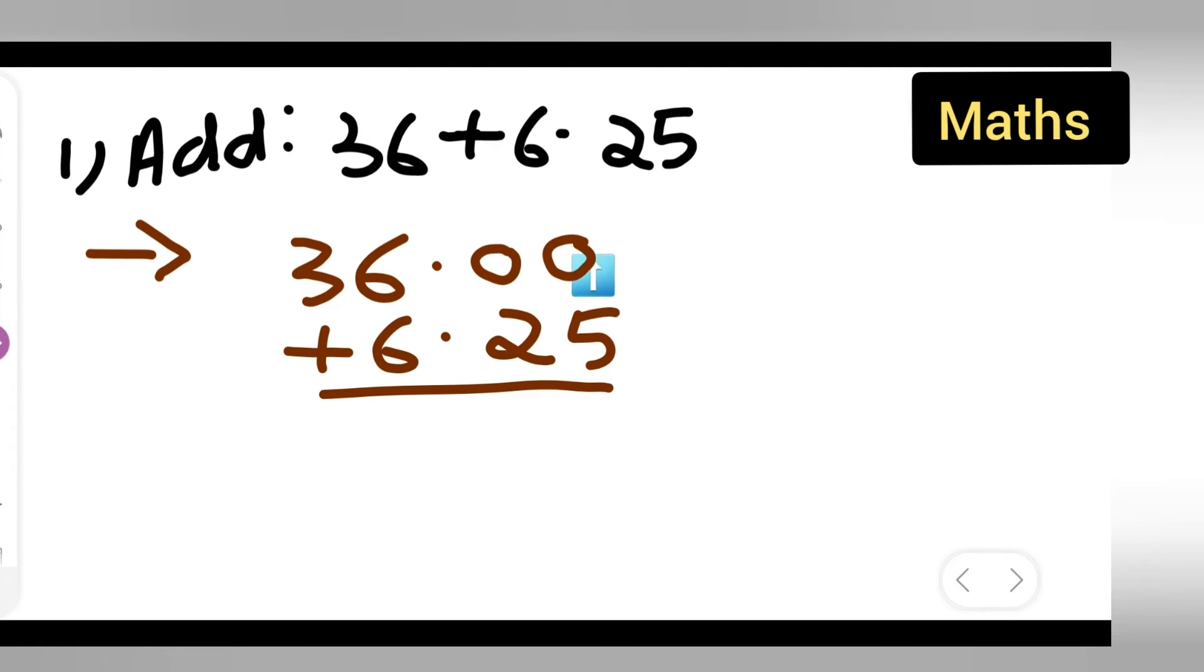Now 5 plus 0 will give you 5, okay. Next is 2 plus 0 will give you 2. Because you are adding with a decimal point, put it as it is. Then 6 plus 6 will give you 12, so carry 1 will be there. Then 3 plus 1 will give you 4, so basically your answer...